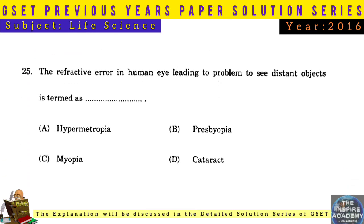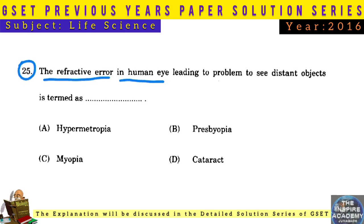Question No. 25: The refractive error in the human eye leading to difficulty seeing distant objects is termed myopia.